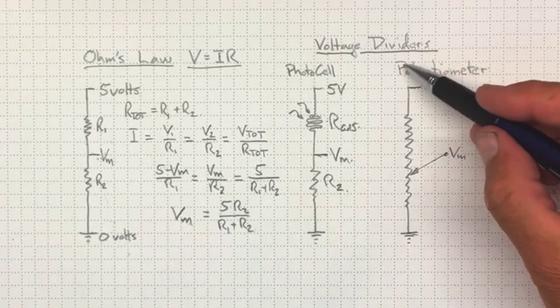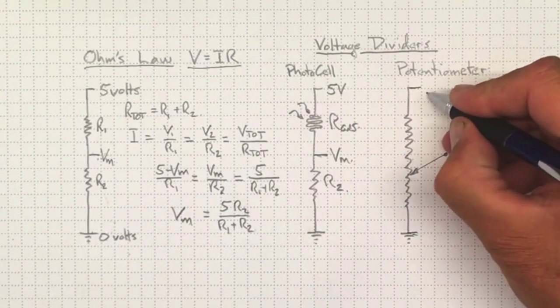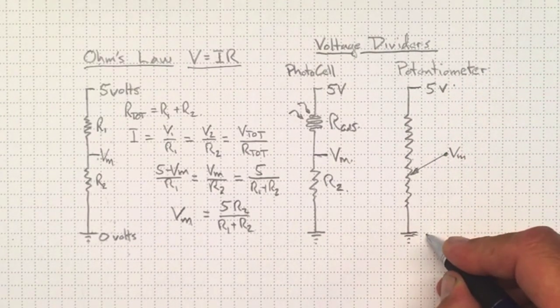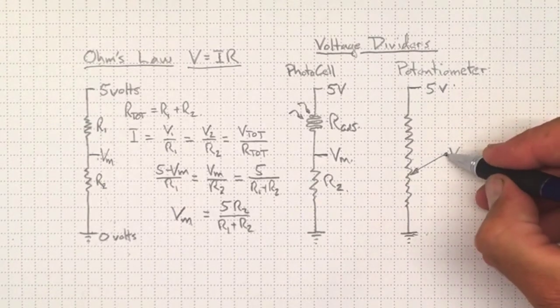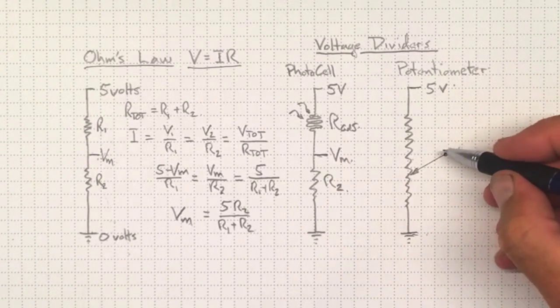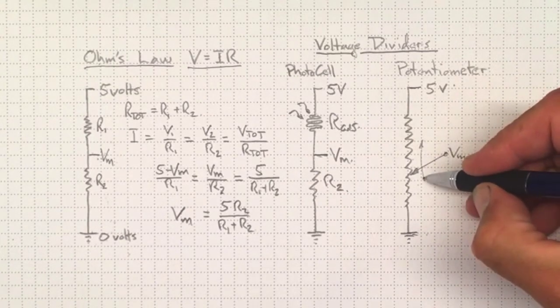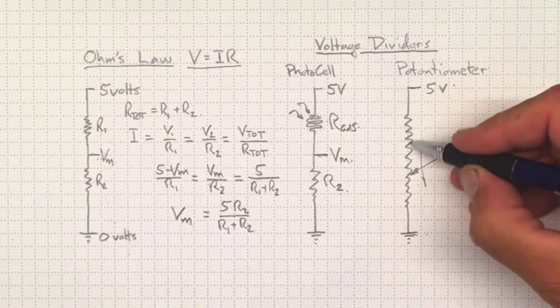Likewise, if we put a potentiometer in our circuit and put five volts on one side and zero volts ground on the other side, then the middle pin on that potentiometer is the wiper pin.